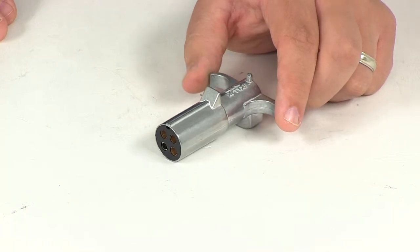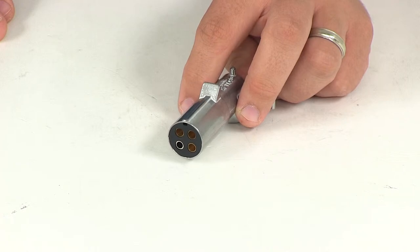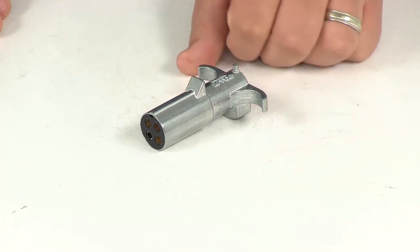When it comes to the wiring configuration, the white wire is your ground. Green is for right turn and brake. Yellow or red is for left turn and brake, and then your brown is for your tail lights.